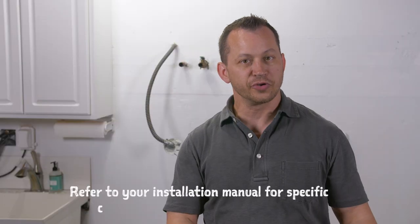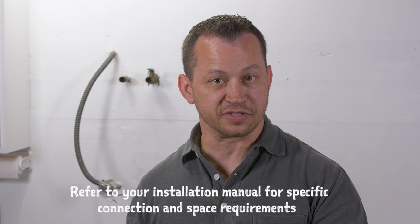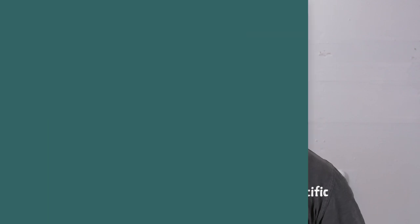Now that we've got the old unit removed, there are some things that we need to do before we get the new unit in place. The old unit had the water inlet and the hot water outlet on the top. On the new unit, those are on the side, so I have to move the plumbing for that. We also have to have the six inch distance off the wall, so I'm going to prep for that as well.